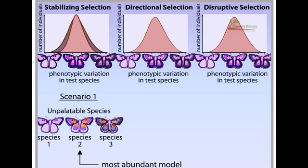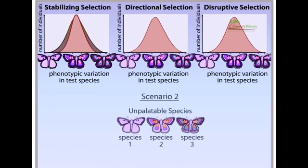A graph of the population in a future generation will have a higher, narrower peak. This is an example of stabilizing selection. Stabilizing selection reduces variation by reducing the frequencies of the more extreme phenotypes. In another scenario, the distasteful species with the least markings disappears.